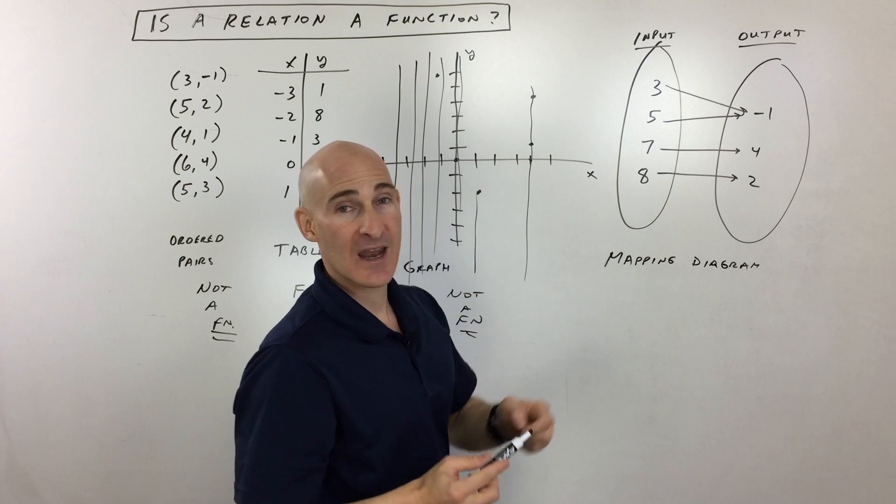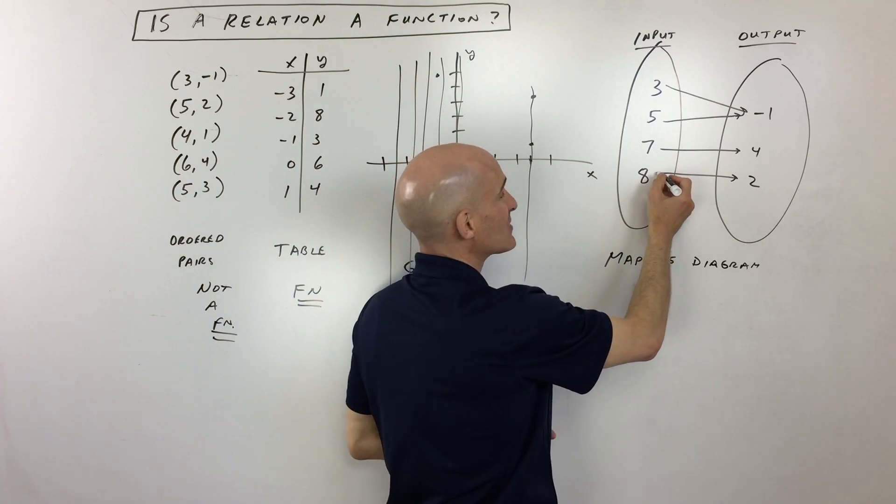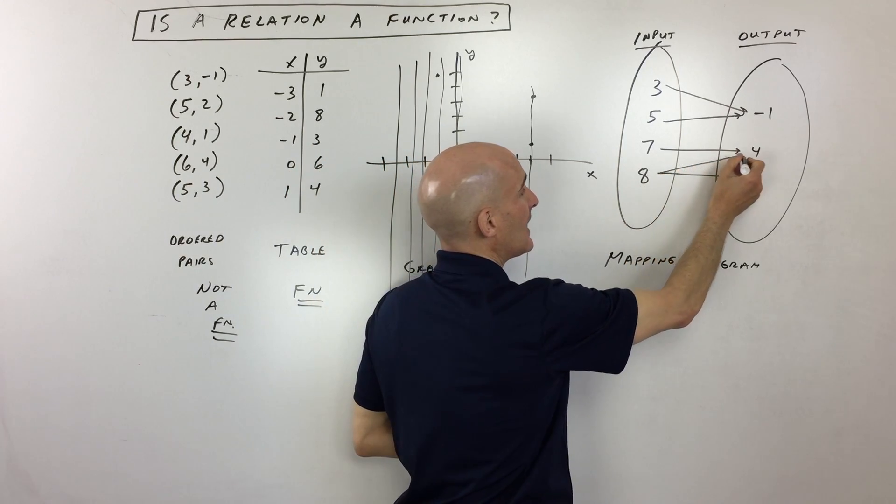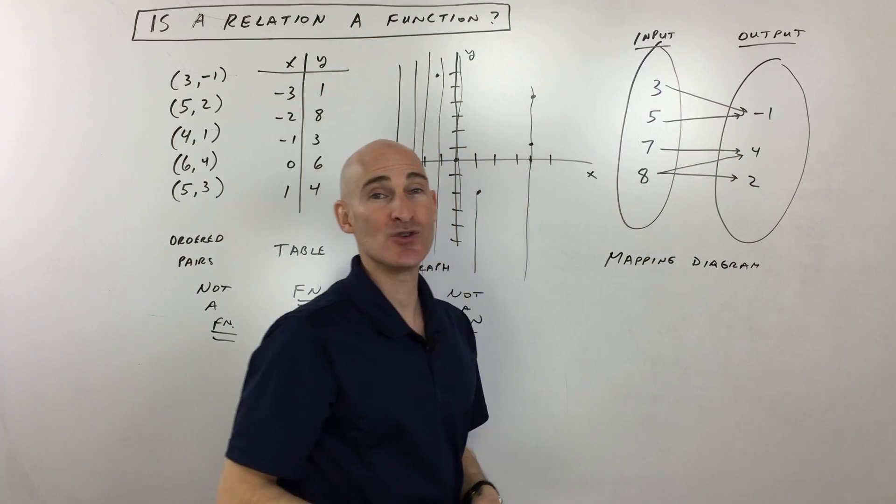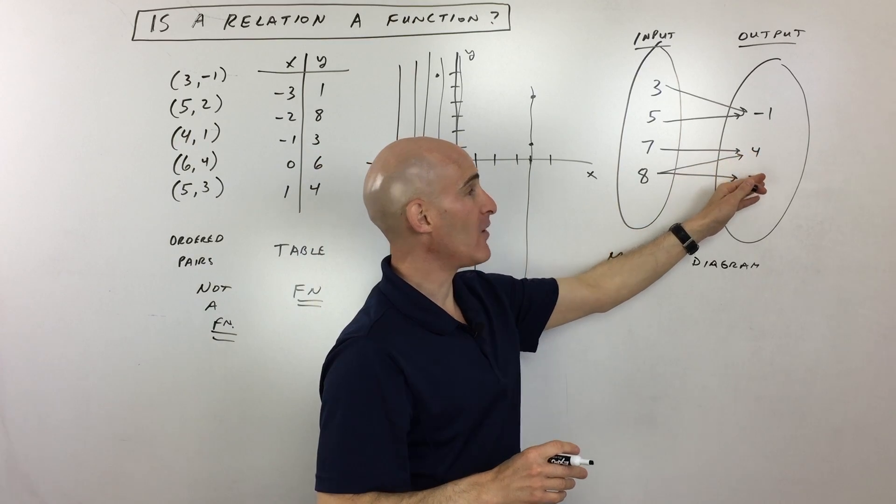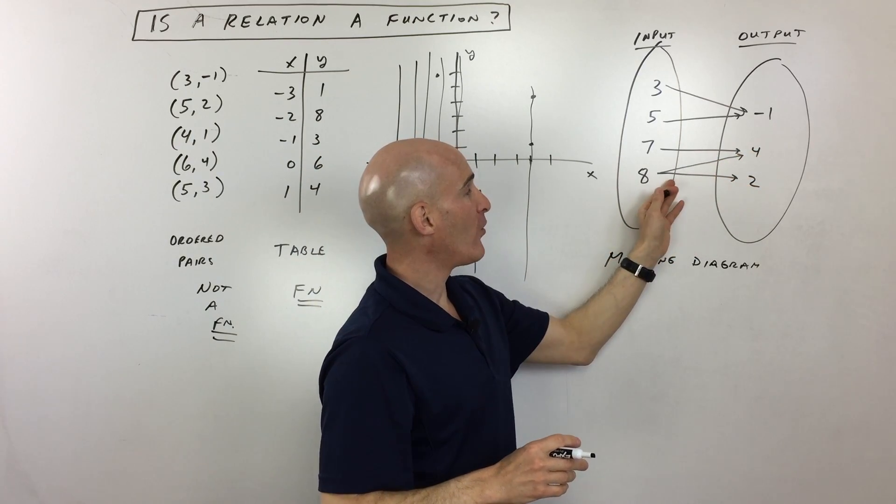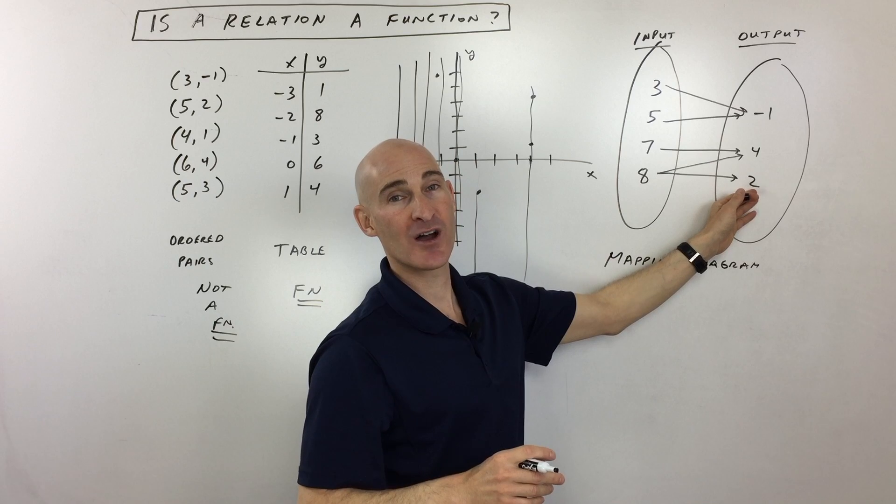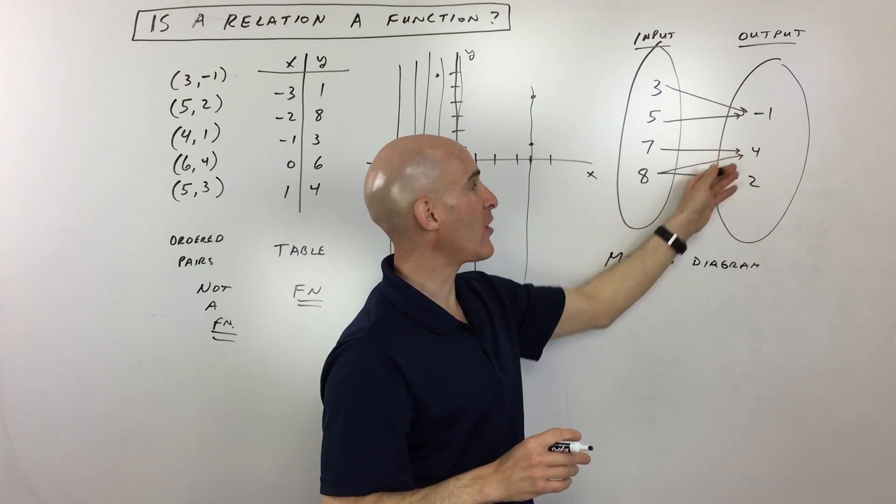What you don't want, and I'm going to change the setup of this particular one, is you don't want eight, for example, going to four and eight going to two. So you press that button on the vending machine. One time you get four that comes out, whatever that represents, Coca-Cola, or you press eight and out comes Pepsi. So you don't know what your outcome is going to be.